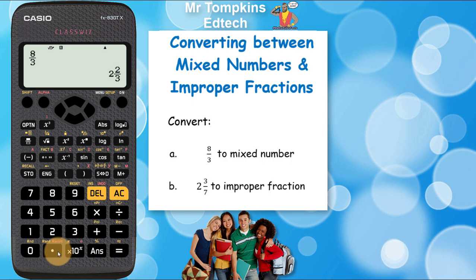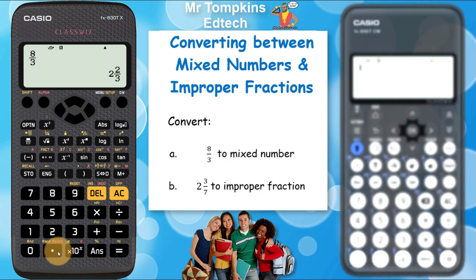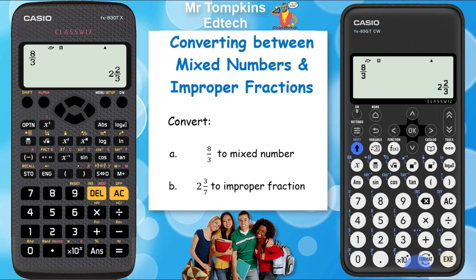Over on the new Casio calculator I'm going to do the same thing. I'm going to press the 8 first for the numerator, then the fraction key, and then type in the denominator of 3, and then press the execute button. Now this calculator immediately turns it into a mixed number — I've got it as 2 and 2 thirds on the screen. Its standard format is as a mixed number, so that one is a little bit easier.